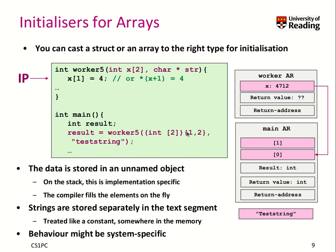What I can do is create an object which has no name and fill it with two values, two integers in this case. So in the stack, this will look like that in my main stack frame. I will have basically somewhere stored these two values, so element 0 and element 1, with value 1 and 2.